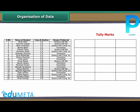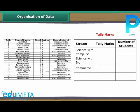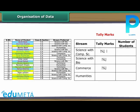Consider the data collected by Sheetal on the stream preferences of class 10 students. Make three columns: streams, tally marks and number of students. Specify all available streams under streams one by one. Under tally marks, denote a student with a preference for a particular stream by a tally mark against that stream. Indicate every fifth student preferring a particular stream by a slanting line crossing the previous four tally marks. Now count the tally marks against every stream and record it under number of students.